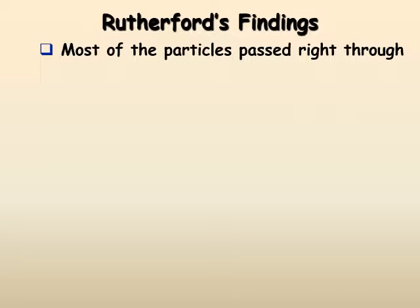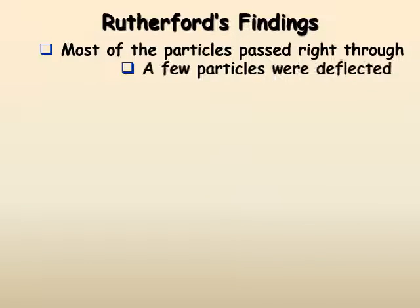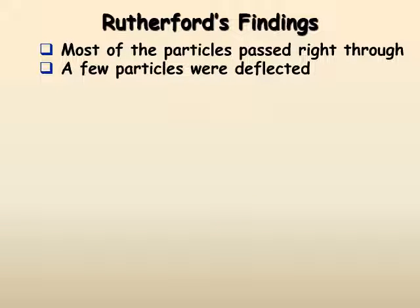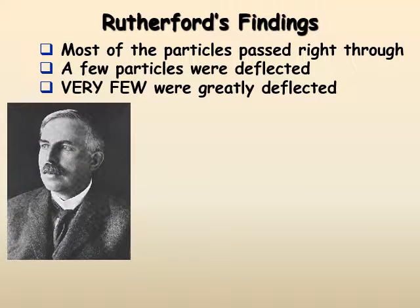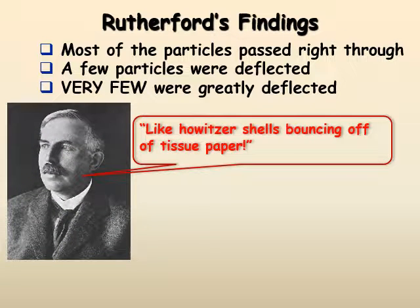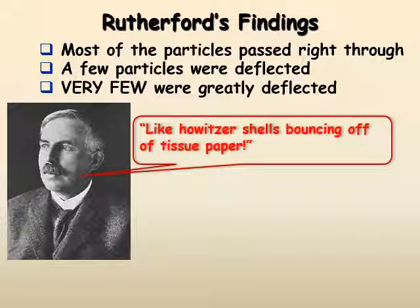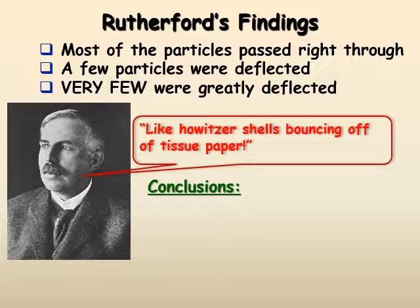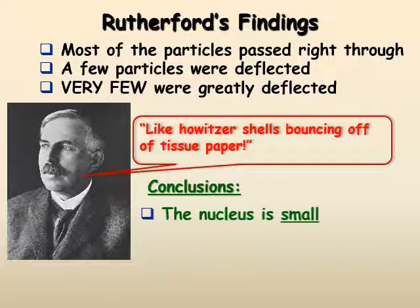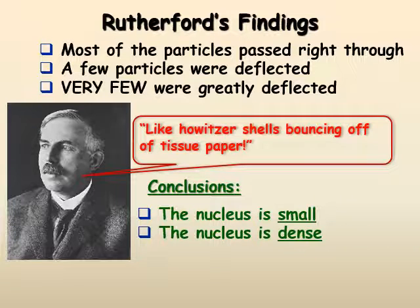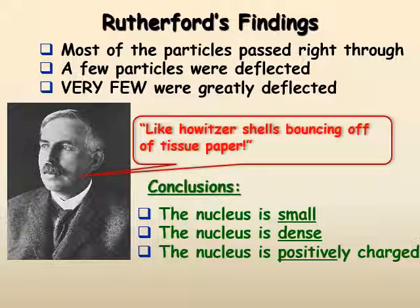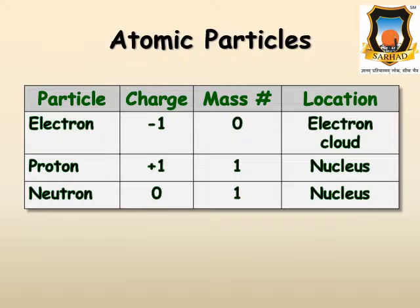Rutherford's findings: Most of the particles passed right through. A few particles were deflected. Very few were greatly deflected, like bullets or shells bouncing off of tissue paper. Conclusions: The nucleus is small. The nucleus is dense. The nucleus is positively charged.